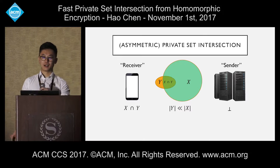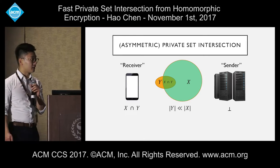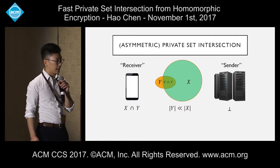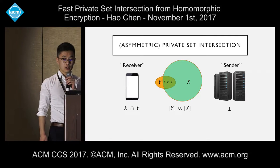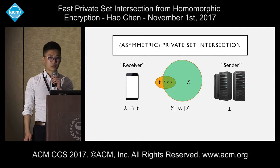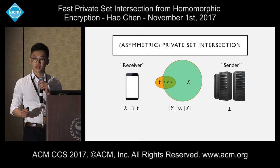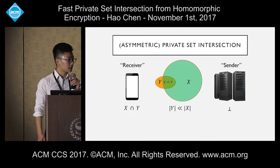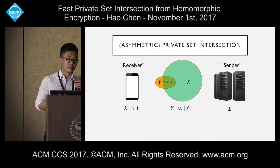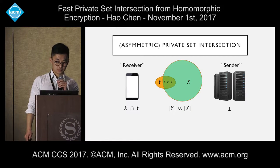We'll be back into the semi-honest world. The setting we're considering here is asymmetric private set intersection, where we assume that the receiver who's supposed to get the intersection has a much smaller set than the sender. The receiver can be some kind of mobile app, and the sender can be a high-end server.